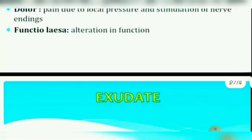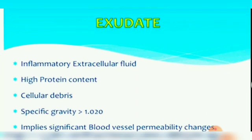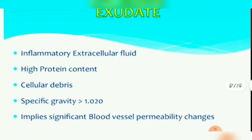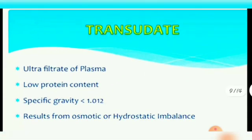Exudate is formed in acute inflammation; transudate is formed in chronic inflammation. Exudate is an inflammatory extracellular fluid with high protein content, cellular debris, and specific gravity greater than 1.020 — it implies blood vessel permeability changes. Transudate is an ultrafiltrate of plasma with low protein content and specific gravity less than 1.012, resulting from osmotic or hydrostatic imbalance.